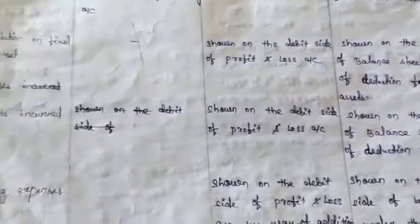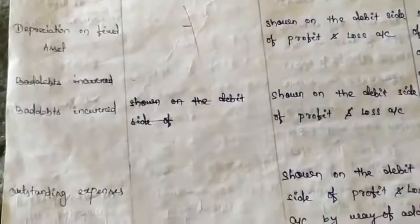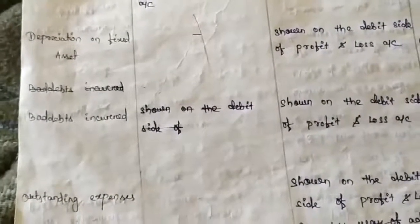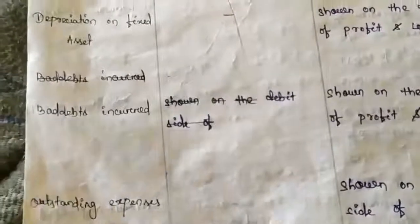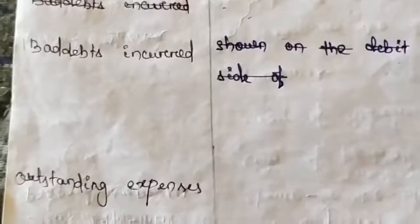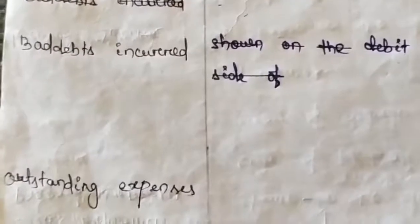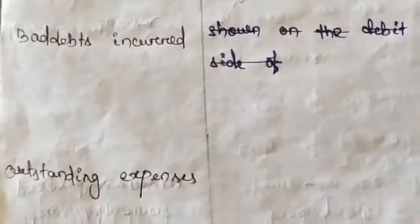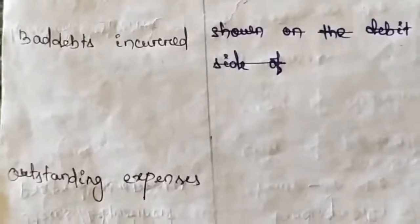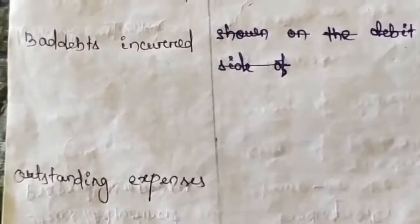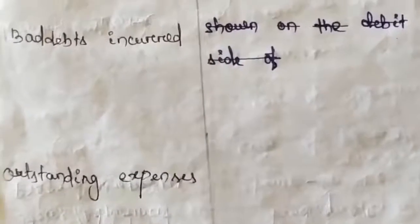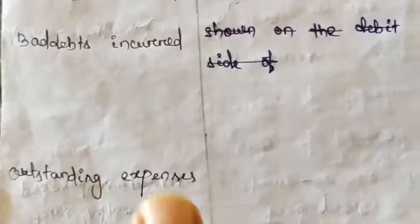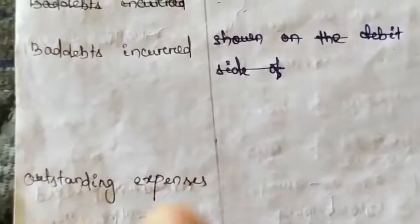Next adjustment is outstanding expenses. Outstanding expenses are expenses that are not paid even though the due date has passed. According to the accrual concept, these are considered liabilities. The journal entry for outstanding salary, for example, is: salary account debited to outstanding salary account. The first treatment of the expense is shown on the debit side of the profit and loss account. However, outstanding expenses can be direct or indirect — wages are direct, salaries are indirect.